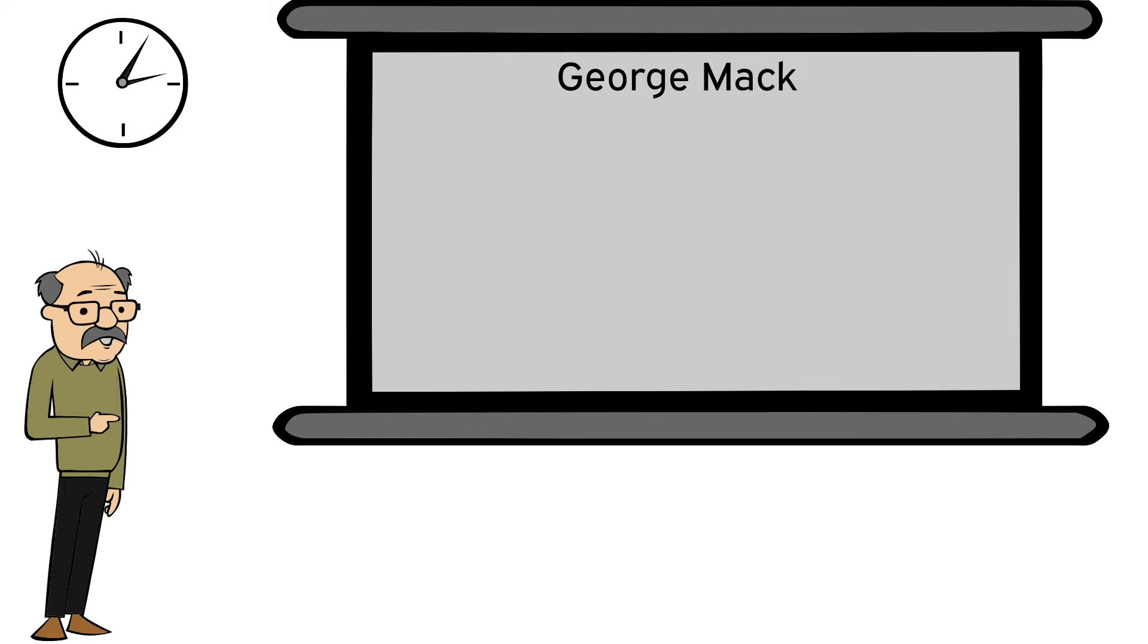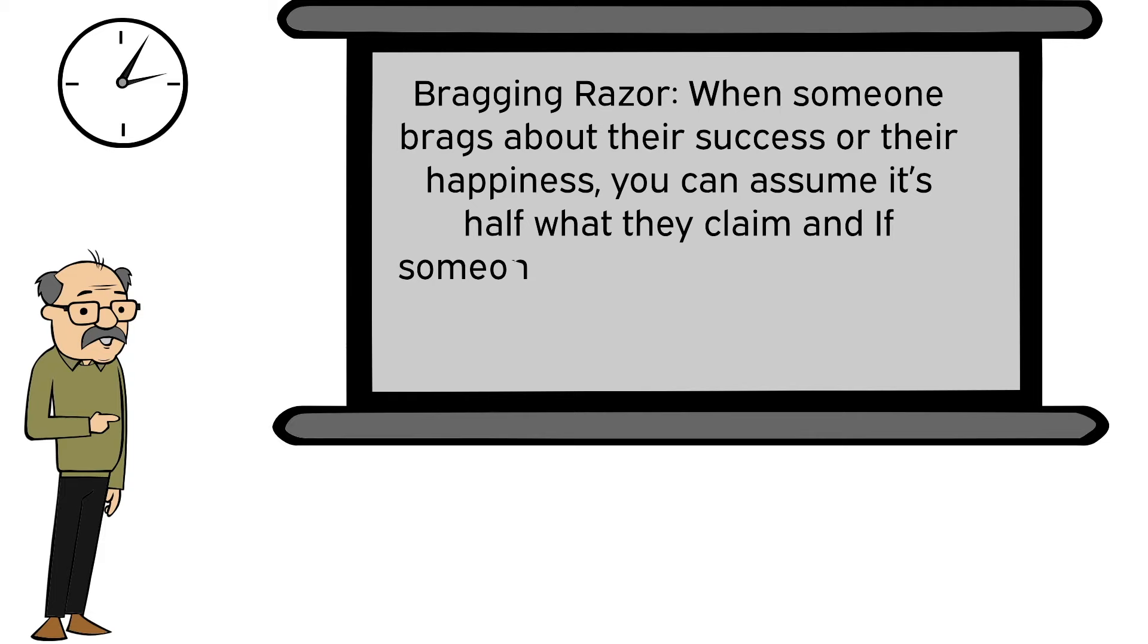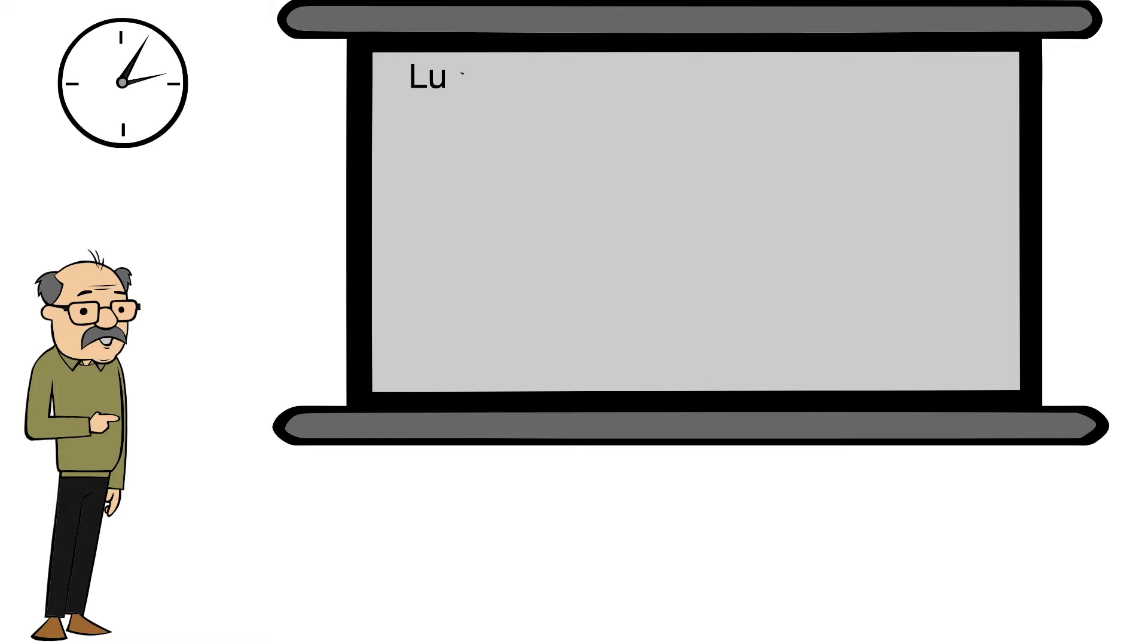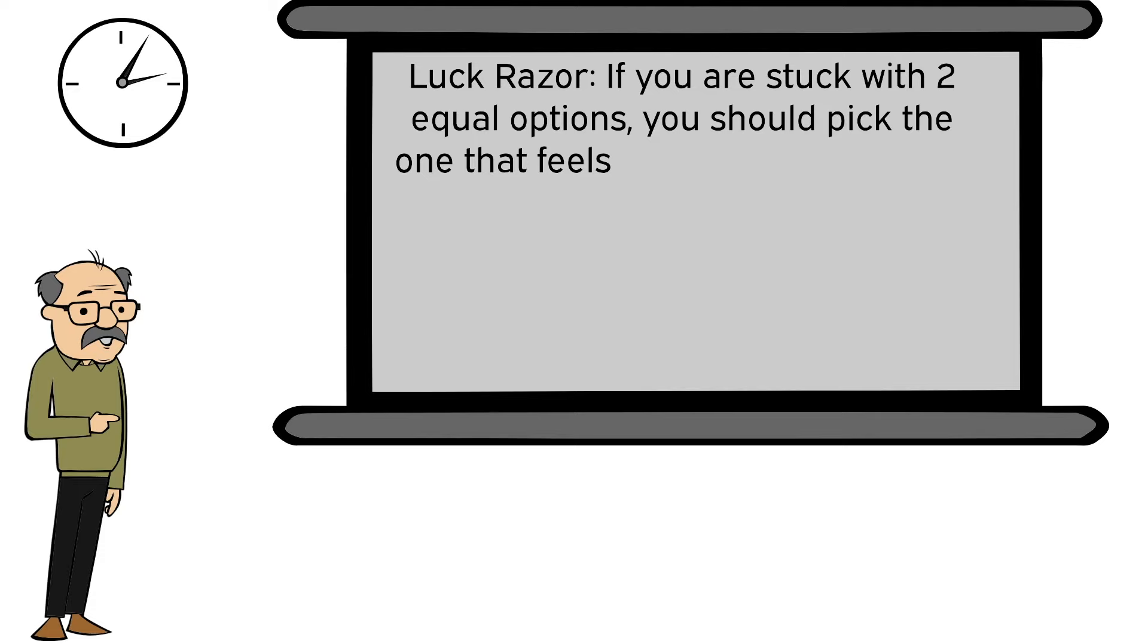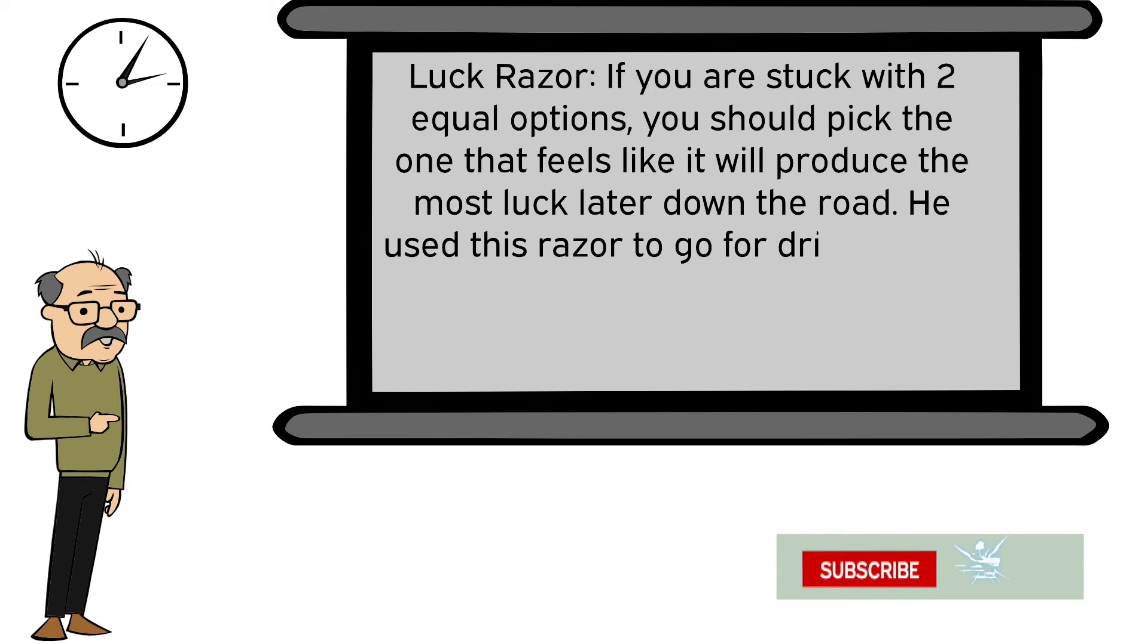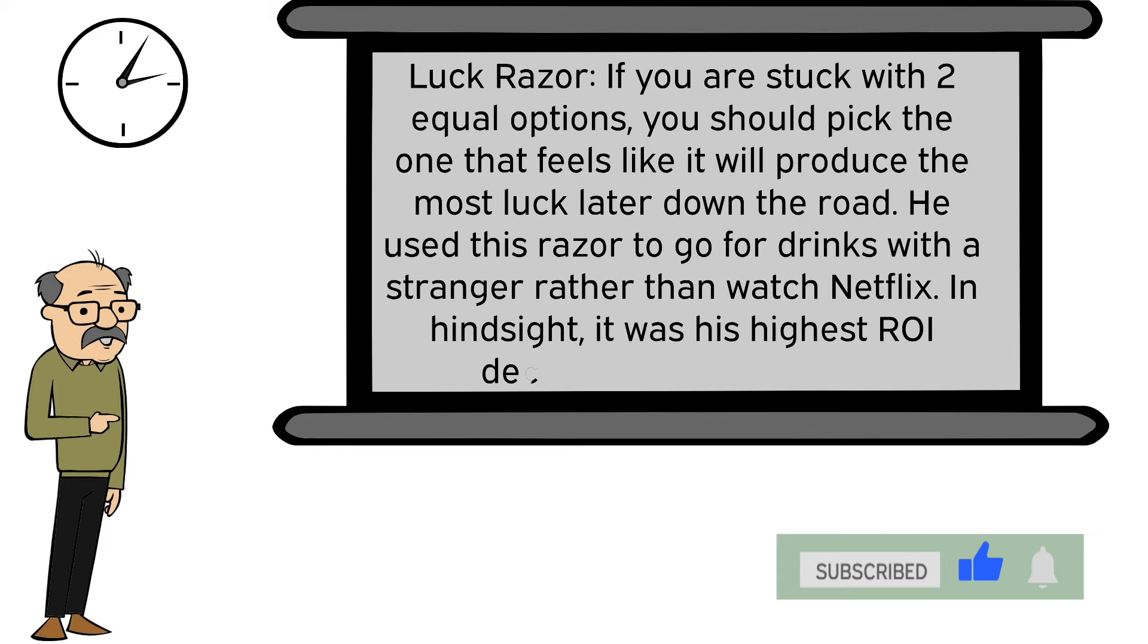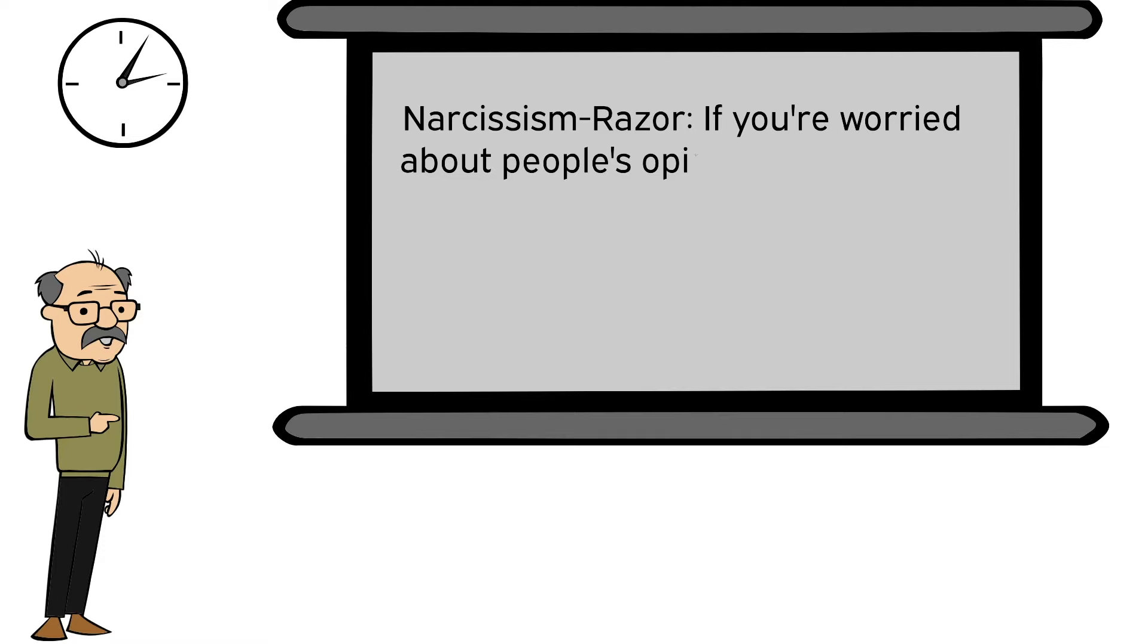We will now explore a few of his particularly useful razors. Bragging razor: when someone brags about their success or their happiness, you can assume it's half what they claim. And if someone downplays their success or happiness, assume it's double what they claim. Luck razor: if you are stuck with two equal options, you should pick the one that feels like it will produce the most luck later down the road. He used this razor to go for drinks with a stranger rather than watch Netflix. In hindsight, it was his highest ROI decision he'd ever made.